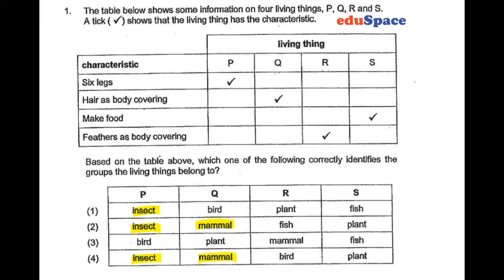And R has feathers, so clearly it's a bird. And lastly, S makes food, so it's definitely a plant. So in this case, the answer is clearly number four.